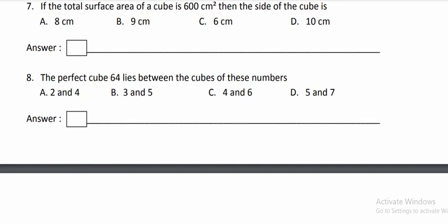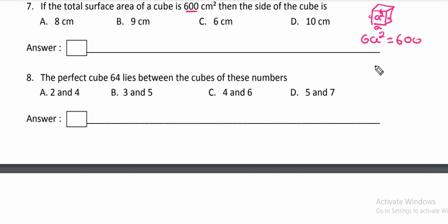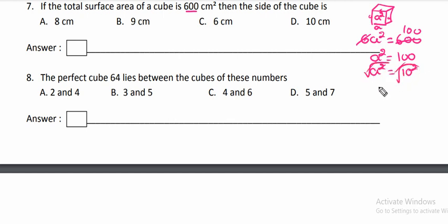7th question: if the total surface area of a cube is 600 cm², then the side of the cube is — here all sides are equal. The one side area is a square, and it has totally 6 sides. Therefore, the total surface area is 6a square. So 6a² = 600 cm². Dividing, a square equals 100, which we write as 10 squared. Taking the square root on both sides, the square and root get cancelled. Therefore a = 10 cm. That is option D.